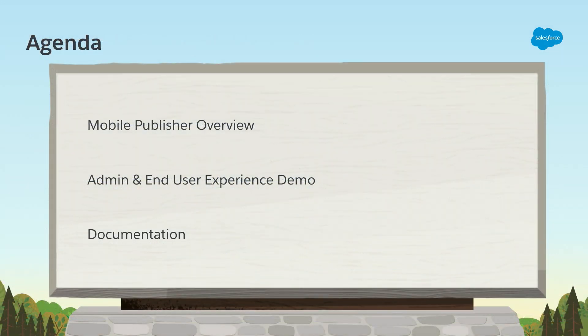So what we're gonna talk about today is Mobile Publisher, and that is the quick and easy way to make a mobile app for your Lightning Communities. We're gonna go into the admin experience — exactly how you do that using clicks not code and what your end users are gonna see. And then I'll wrap it up and show you documentation and where you can go to actually get started for your existing communities.